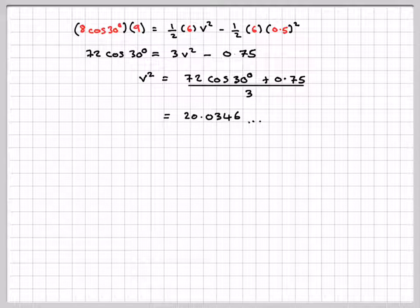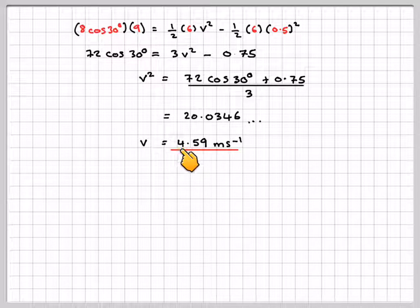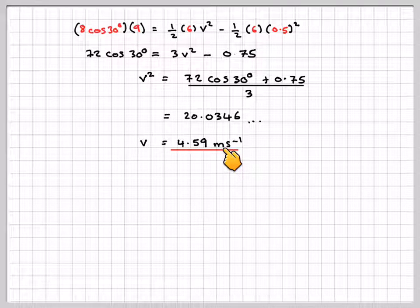So that gives you 20.0346 and we need to find the square root of that, so that's going to be 4.59 meters per second correct to 3 significant figures.